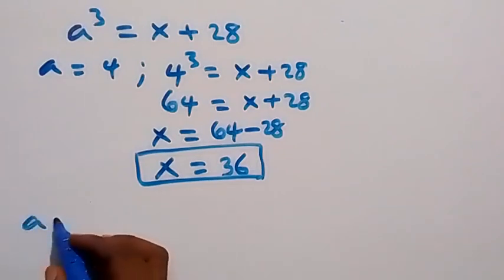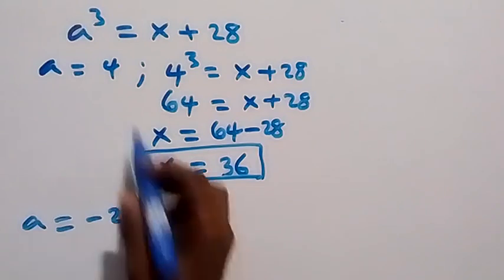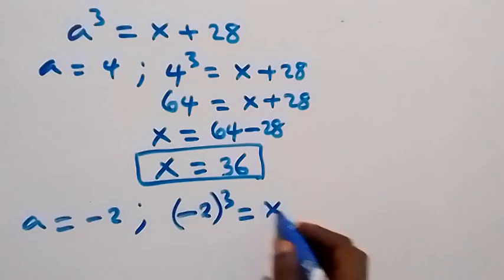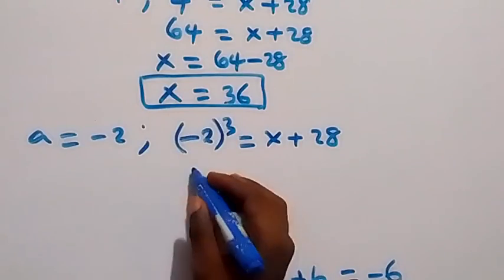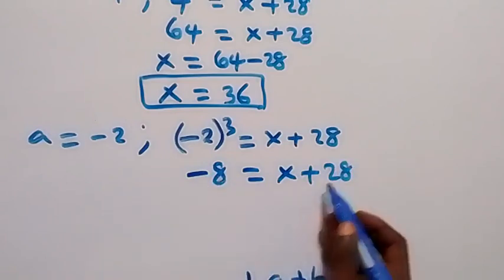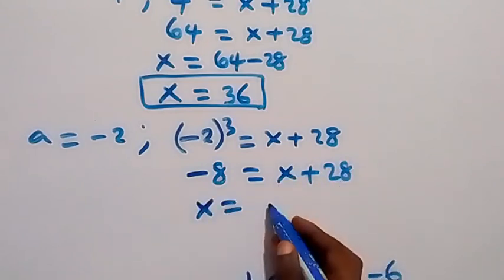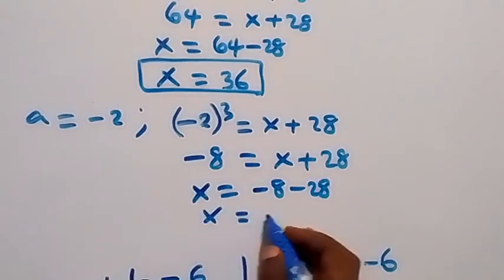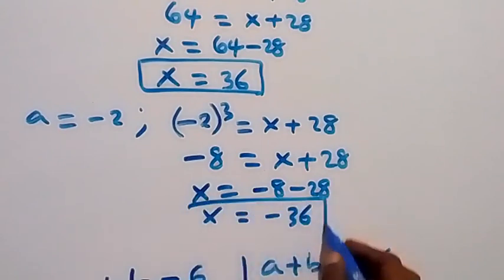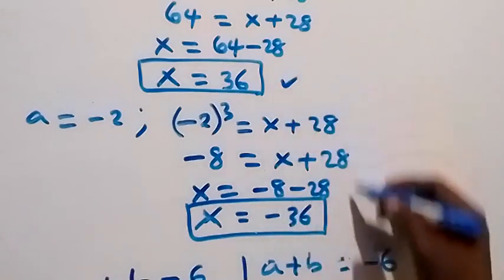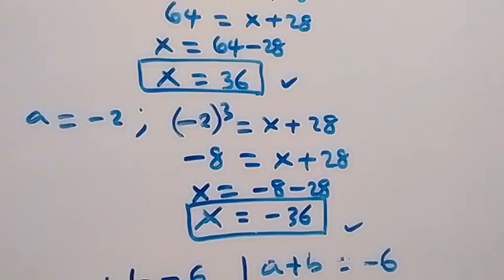For a equals minus 2 from case two: (-2)³ equals x plus 28, so minus 8 equals x plus 28, giving x equals minus 8 minus 28, which is x equals minus 36. So the two possible values of x are x equals 36 and x equals minus 36. We can check these to verify they satisfy the original equation. Thank you for watching.